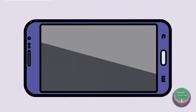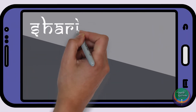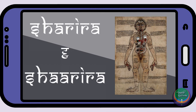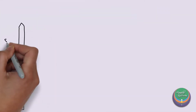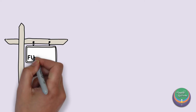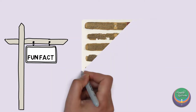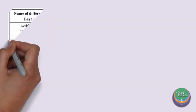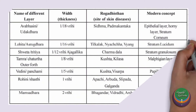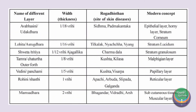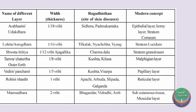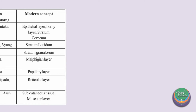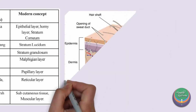Today, we shall go through certain aspects about Dehasharira and Sharira as explained in Ayurveda. As a fun fact, Ayurveda Acharyas also gave a detailed understanding of the various layers of the skin and the pathology of diseases in the respective layers without any kind of assistive imaging or any other techniques in their times. These details are very much in sync with the modern understanding of the skin.